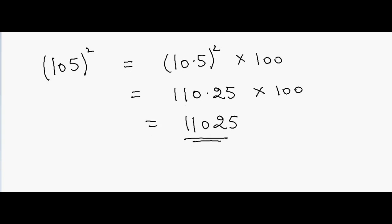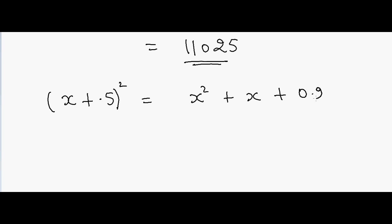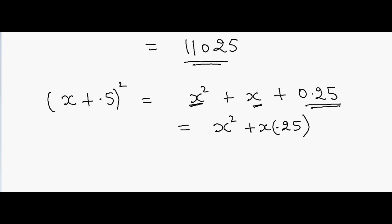So how did we come up with this method? That's very easy. Suppose you have a number x plus 0.5 and we are doing the square of this number. That will give you x squared plus x plus 0.25. So this is just x squared, and then I'm adding x and 0.25 because 0.25 is always in the end — this number will always remain constant, and x will vary based on how the number is changing.